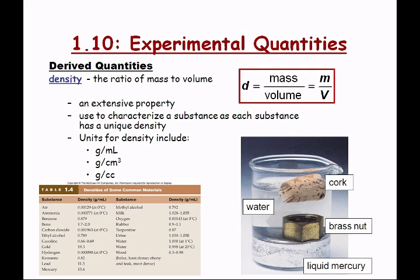Another unit you may see is grams per liter — used when talking about gases, because gases are so voluminous that a milliliter isn't an appropriate unit. Notice we've got four pure substances: cork, water, brass, and mercury. Notice how they're each floating on top of each other — things with the greatest density fall to the bottom of any mixture.